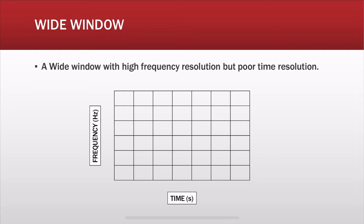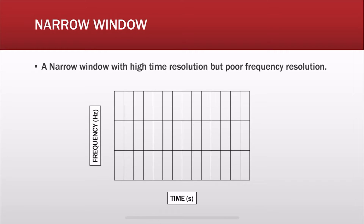A wide window offers high frequency resolution but poor time resolution, where frequency is along the y-axis and time is along the x-axis. In comparison, the narrow window offers high time resolution but poor frequency resolution. This resolution idea will become clear when we actually look at the spectrum plots.